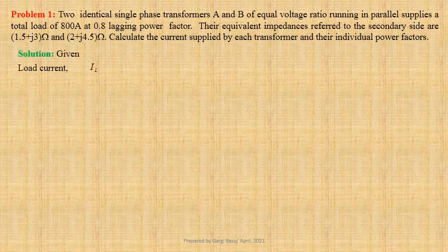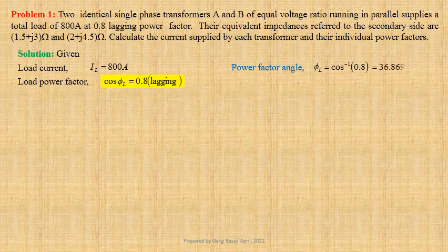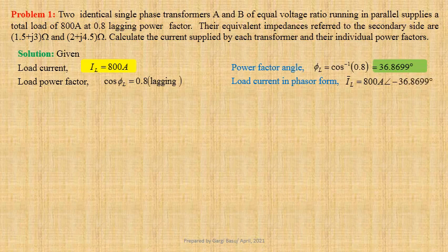Load current IL equals 800 ampere. Load power factor cos phi L equals 0.8 lagging. Power factor angle phi L equals cos inverse 0.8, that is equal to 36.8699 degree. Load current in phasor form IL equals 800 ampere at an angle minus 36.8699 degree.